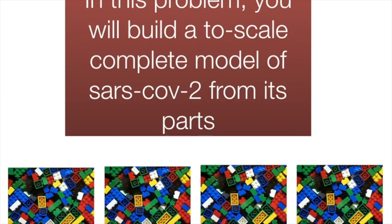So in order to actually improve our understanding of this virus, the first thing we need to know is what does SARS-CoV-2 actually look like? In this problem, you will build a two-scale complete model of SARS-CoV-2 from its parts. You can think of it as all the different proteins, membranes, and RNA of the virus as making up a Lego piece — a very dynamic, fluid, not static Lego piece. Nonetheless, you can put all of these together to finally make up the full virus.